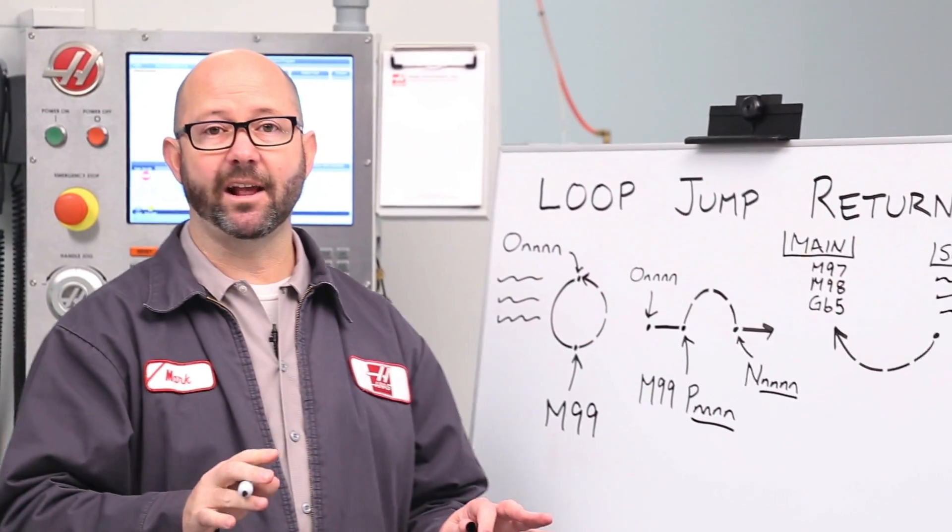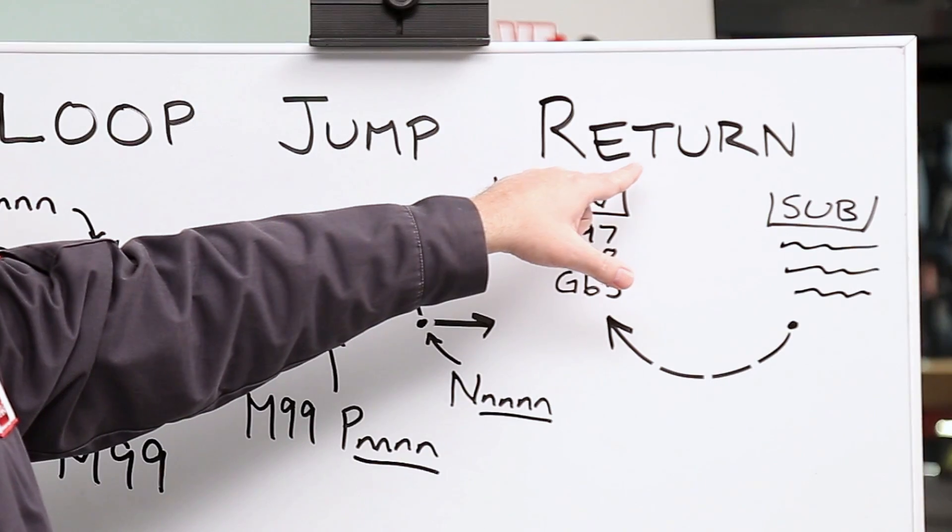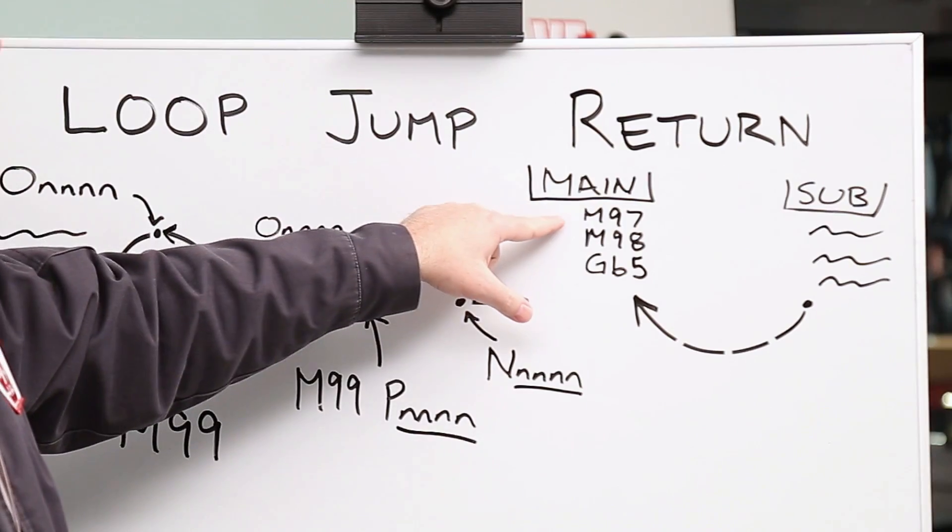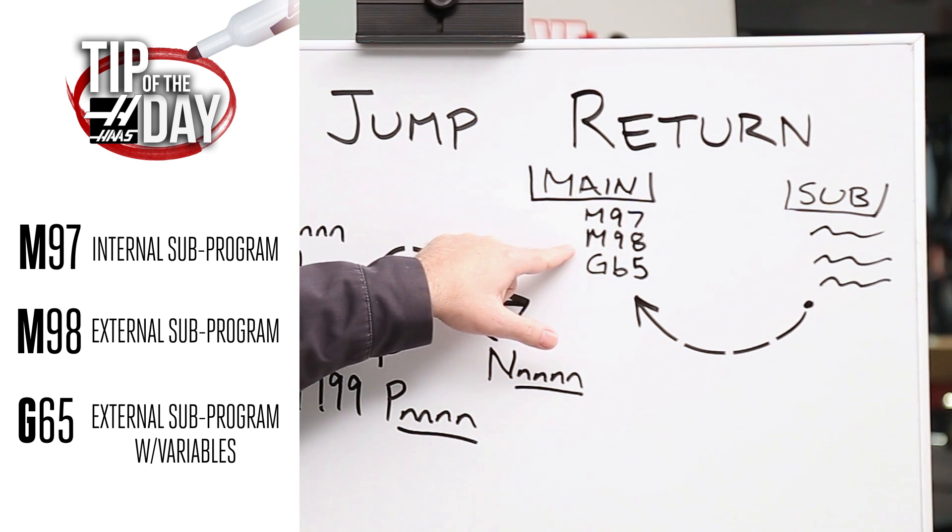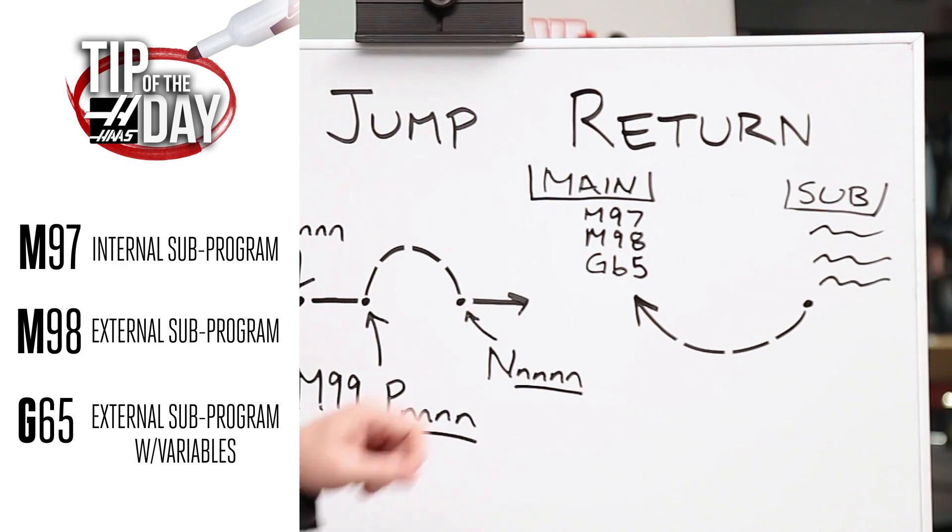Now, the last talent our M99 has to show us is our M99 return. We can call up an internal sub program with an M97, we can call up an external sub with an M98, and we can call up an external sub that can transfer macro variables with a G65.